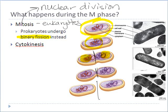In eukaryotes, mitosis is always followed by a series of events called cytokinesis, which is basically cytoplasmic division. This is where we divide up all the other contents of the cell — each daughter cell gets so many organelles, so much cytosol, so many ribosomes, and so on.